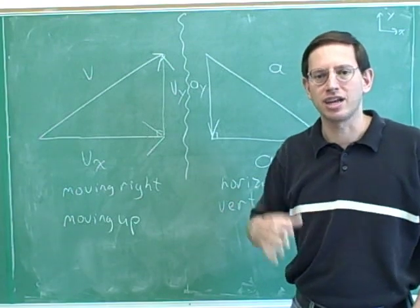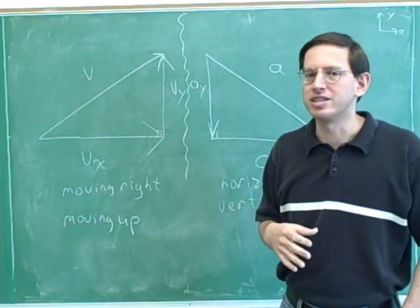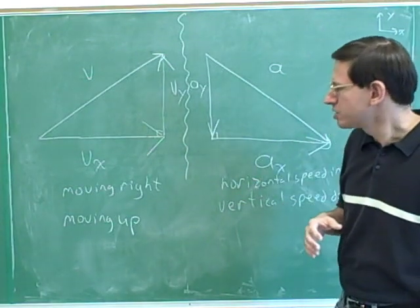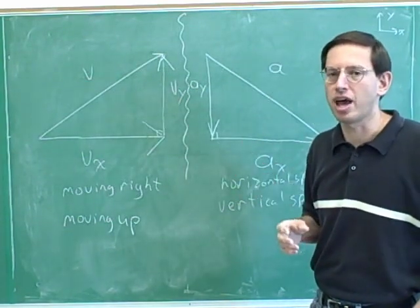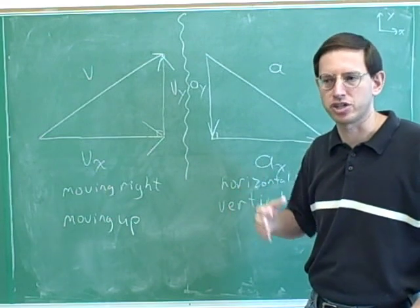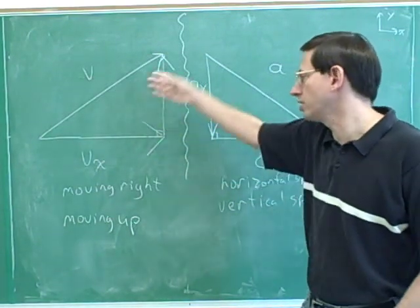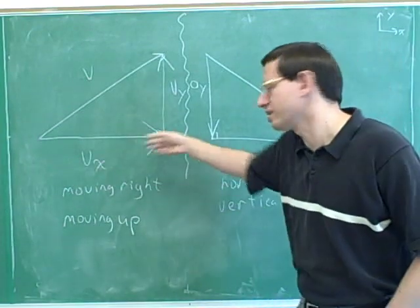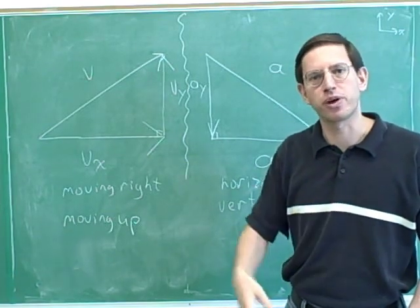A lot of the time students get lazy and try to work with the original overall vectors, but you can't really solve problems using overall vectors. You've got to pretty much always break the vectors into components — only when you've broken the vectors into components can you start solving problems. Earlier in the videos, I was giving problems where I told you the components — v sub x and v sub y — and you can see how easy it was to analyze the motion. When I give you the overall vectors, the first thing you have to do is convert those into components.